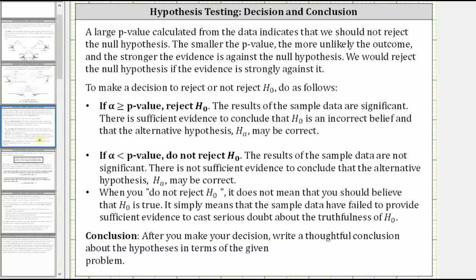In general, a large p-value calculated from the data indicates that we should not reject the null hypothesis. The smaller the p-value, the more unlikely the outcome, and the stronger the evidence is against the null hypothesis. We would reject the null hypothesis if the evidence is strongly against it.